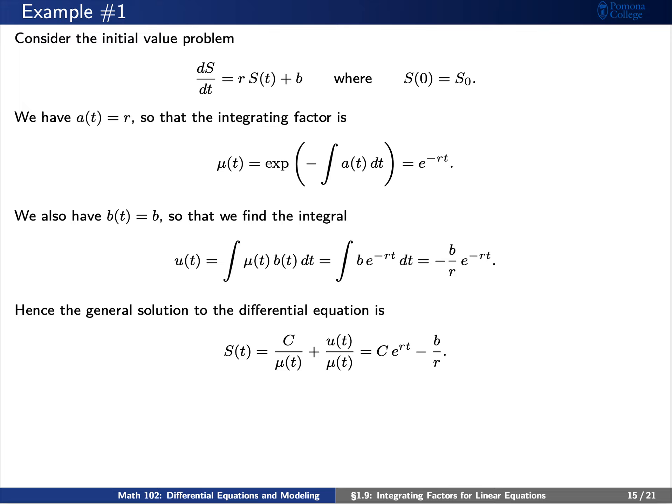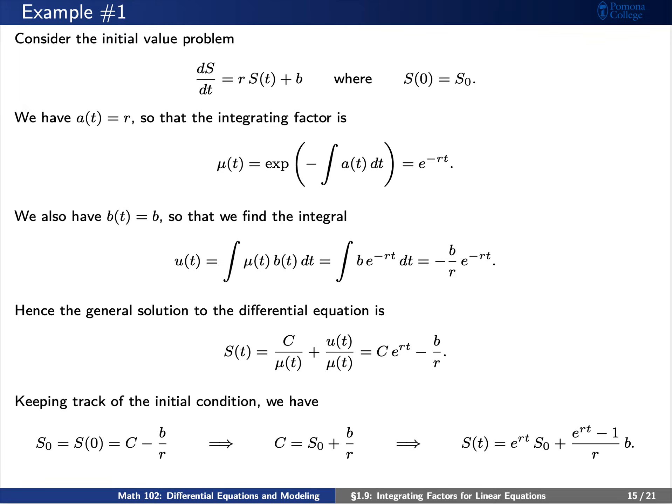Now remember that we have an initial value problem. Keeping track of the initial condition, we see that s of zero must equal c minus b over r. So our constant c must be s-naught plus b over r. Putting all of this together, our desired solution to the initial value problem is s of t equals e to the rt times s-naught plus e to the rt minus one over r times b.